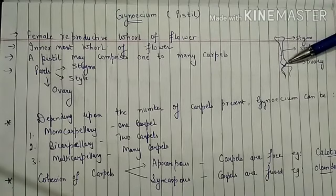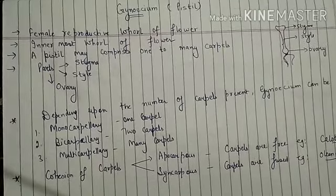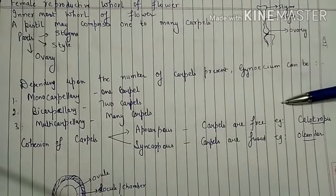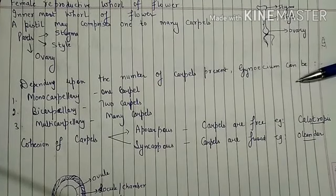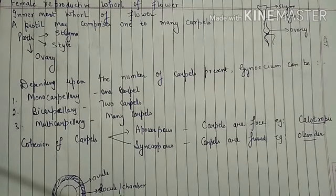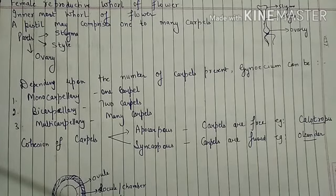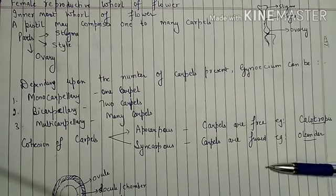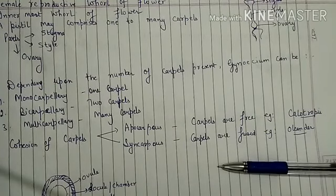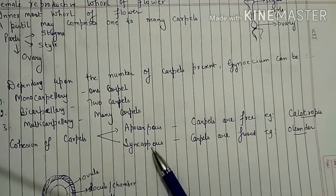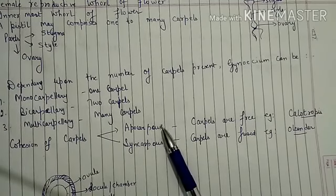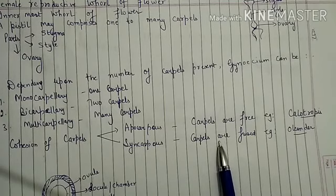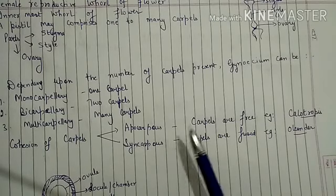In the ovary there are ovules, which will develop into future seeds, and the ovary will develop into a future fruit. Depending on the number of carpels, the gynoecium can be monocarpellary (one carpel), bicarpellary (two carpels), or multicarpellary (many carpels). When carpels are free it is called apocarpous, and when they are fused it is called syncarpous.